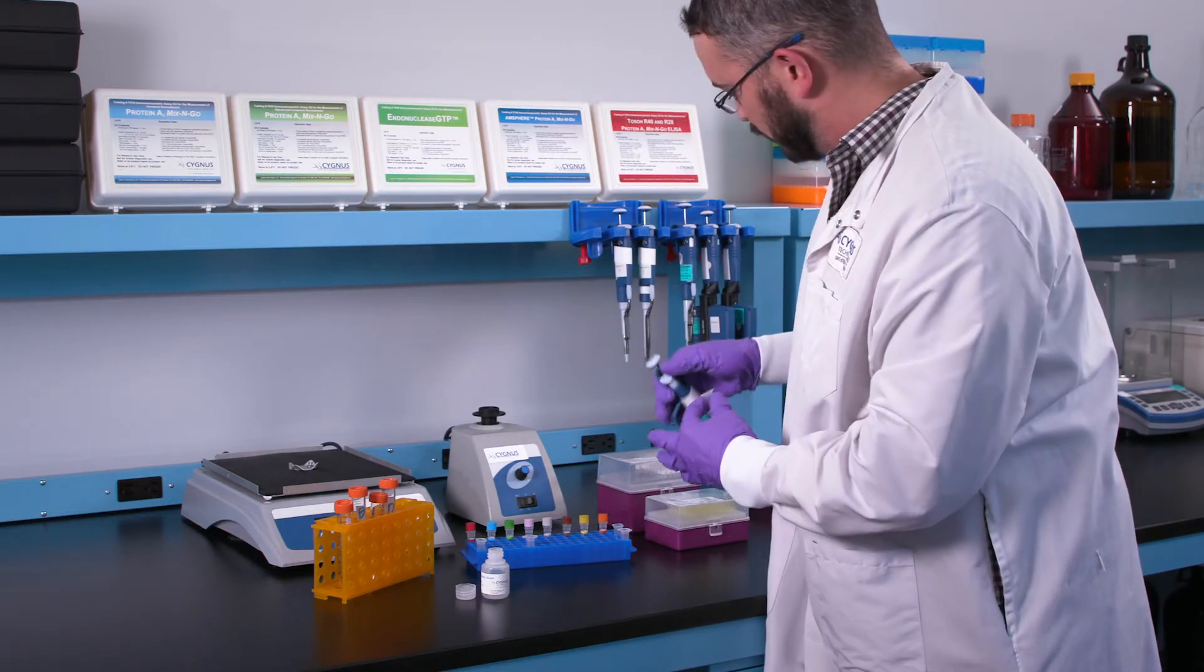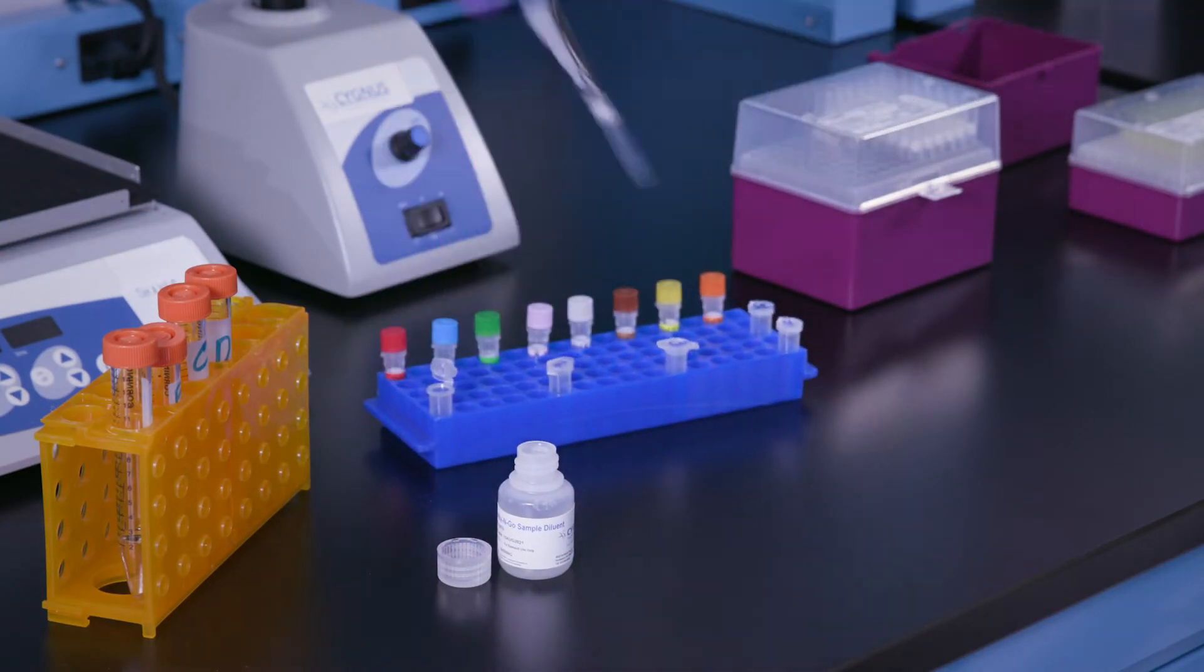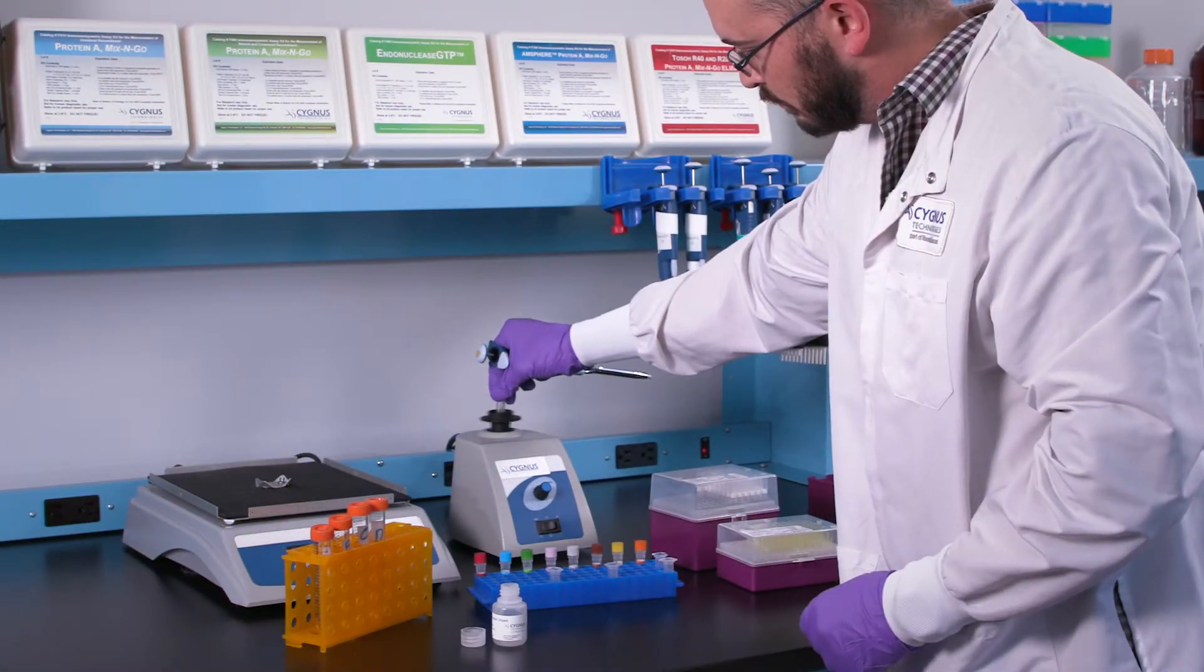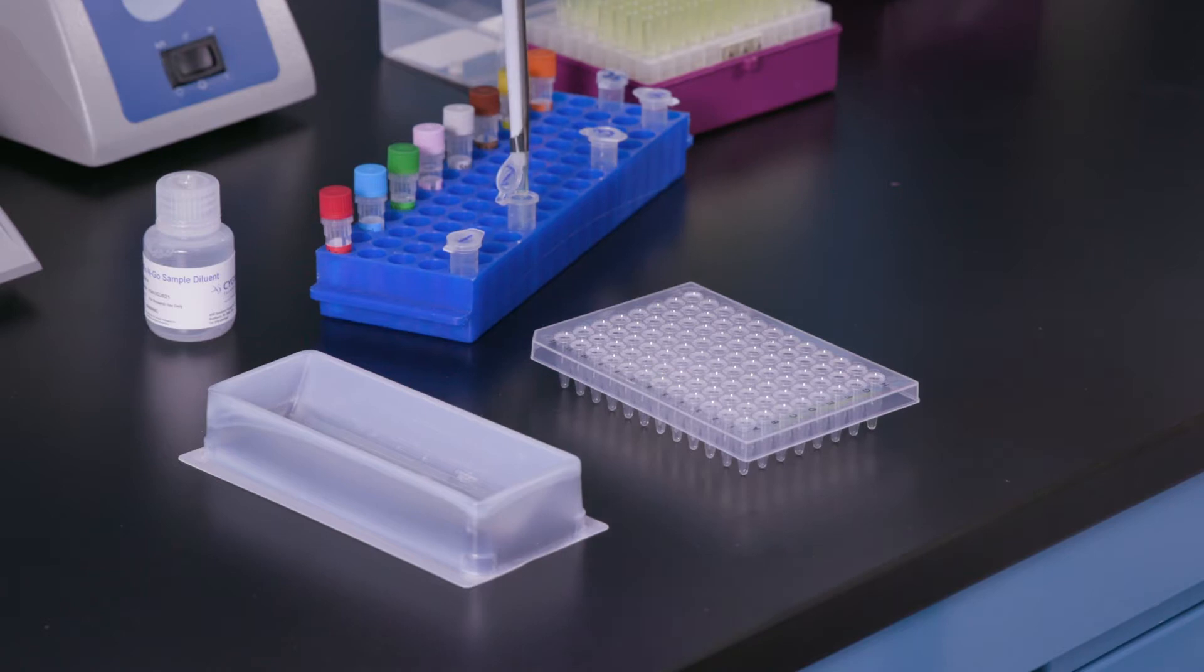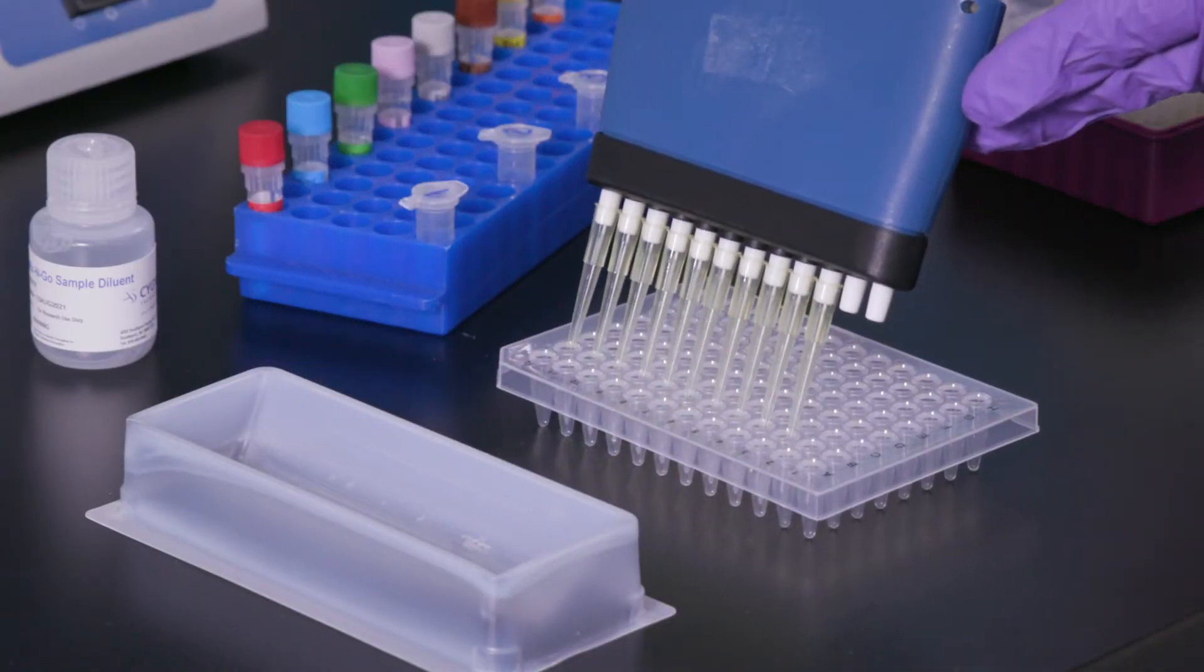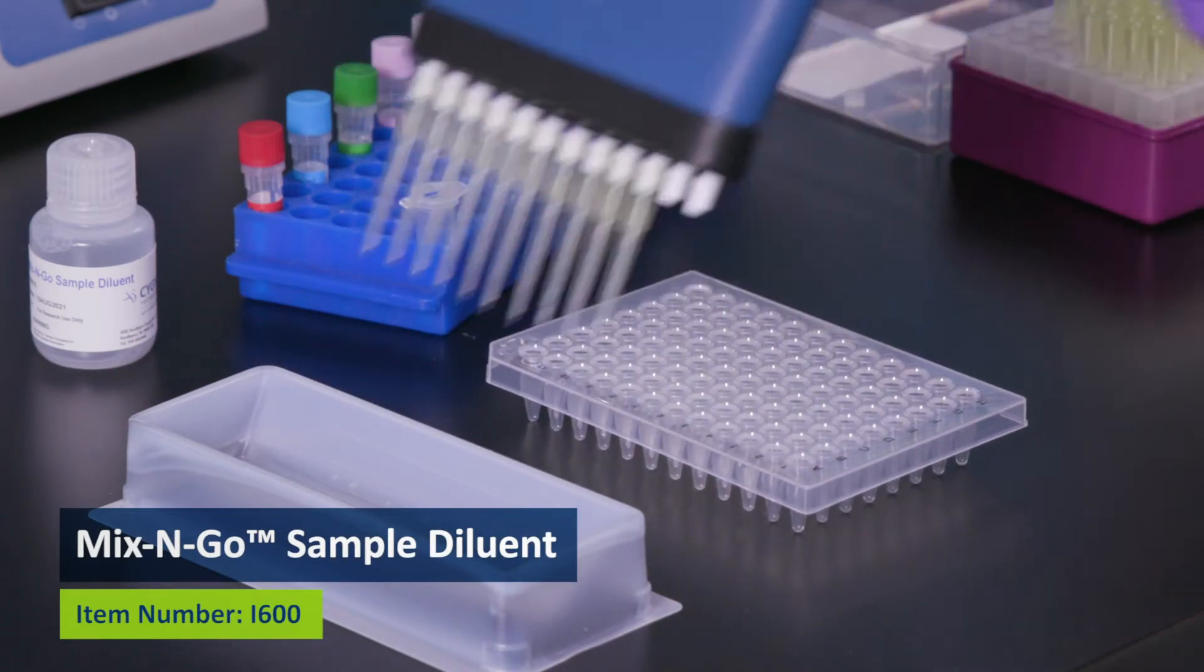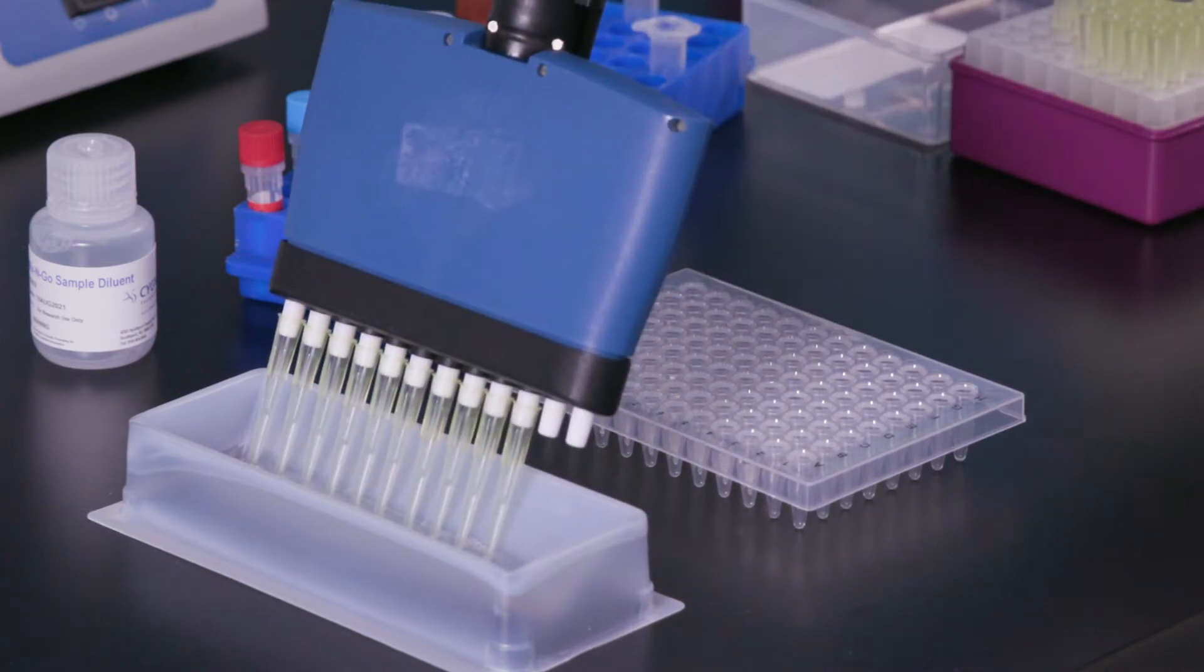Let's begin by reviewing the sample treatment procedure. First, prepare the initial sample dilutions as required, prior to sample treatment. Then, transfer them to the appropriate wells of the sample treatment plate. All subsequent dilutions to be assayed can be made in the sample treatment plate using Mix & Go sample diluent. You will need to ensure that the final volume in every well is 100 microliters.